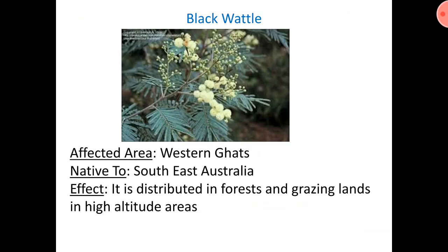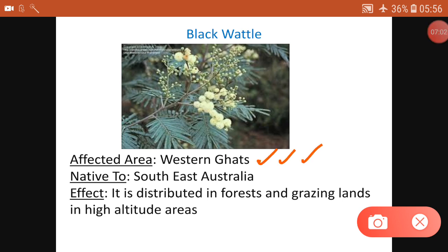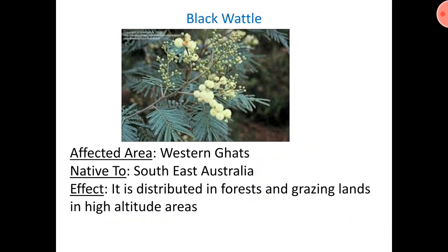Black Wattle affected the Western Ghats, which we all know is known for its biodiversity. It is native to Southeast Australia. In its native ecosystem it would not be invasive, but here in a different ecosystem it has become invasive. It is distributed in forest and grazing lands in high-altitude areas, affecting all those areas.